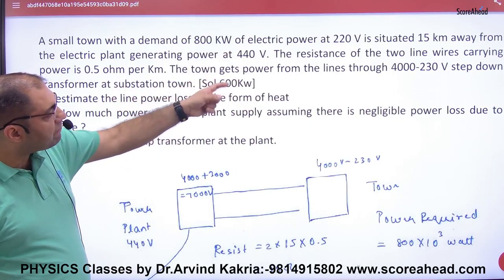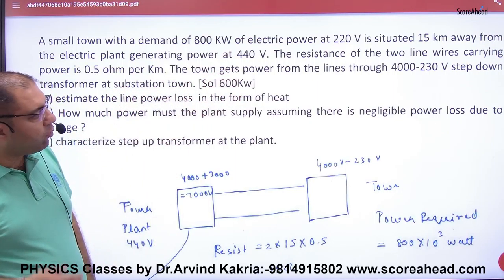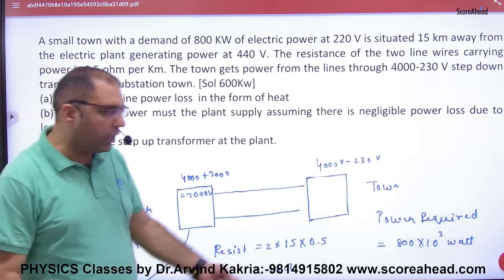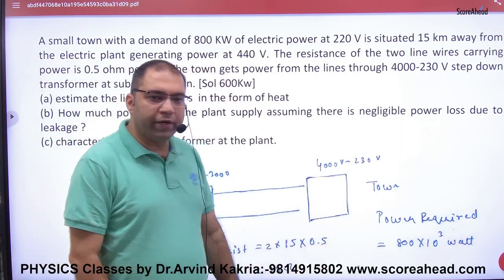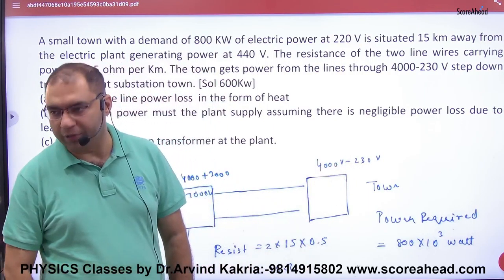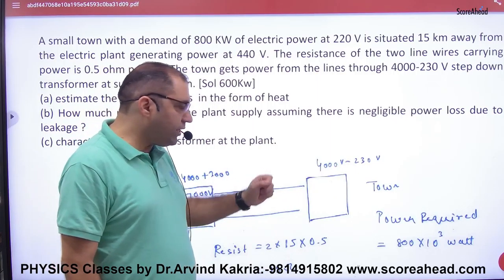Town gets power from a line through 4000 to 230 volt step-down transformer.